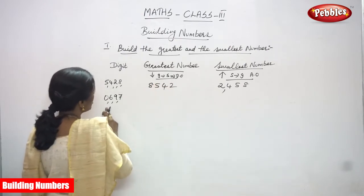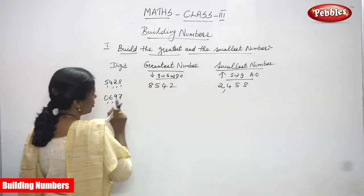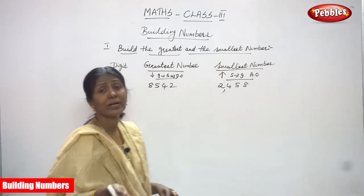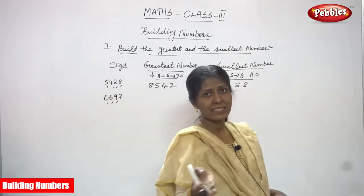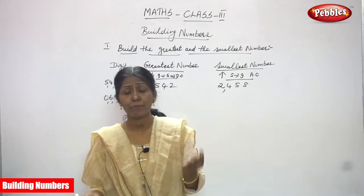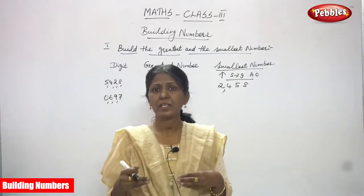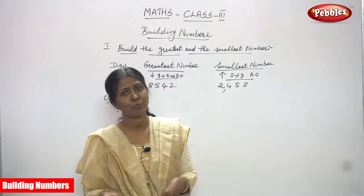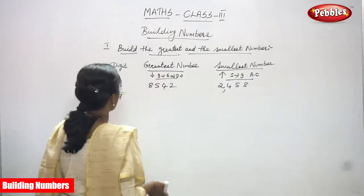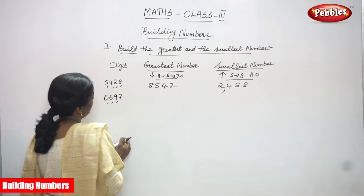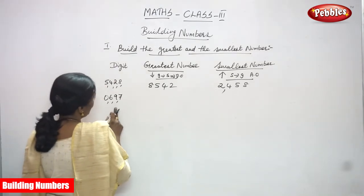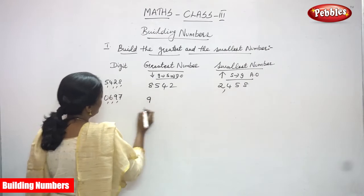Next is 0, 6, 9, 7 — this is a four-digit number. To build the greatest number, we arrange all numbers in decreasing order, called descending order — start with the greatest to smallest. Find which one is the greatest: 9 is the biggest number.